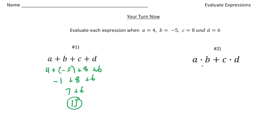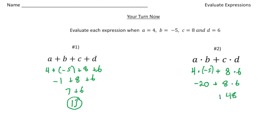The second one is a times b plus c times d. Writing down the values: 4 times negative 5, plus 8 times 6. We multiply first — 4 times negative 5 is negative 20. So negative 20 plus 8 times 6. Now multiply again: 8 times 6 is 48. So that's 48 plus negative 20, and negative 20 plus 48 gives us a final answer of 28.